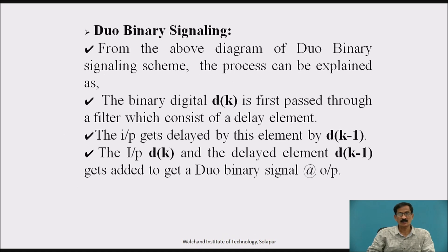This introduces inter-symbol interference in the controlled manner to reduce bandwidth. From the above diagram of duobinary signal scheme, the process can be explained as: the binary digital decay is first passed through a filter which consists of a delay element. The input gets delayed by this element by d k minus 1. The input decay and the delayed element d k minus 1 gets added to get duobinary signal at the output.